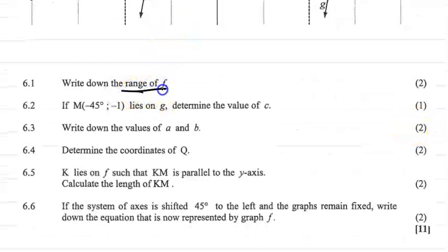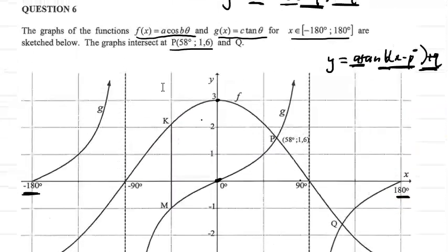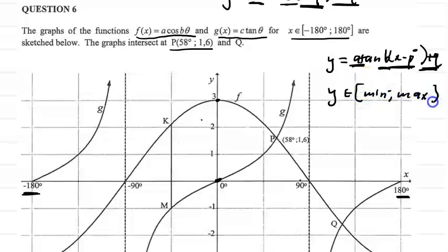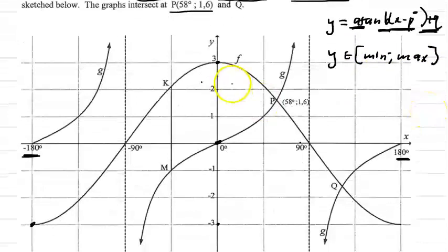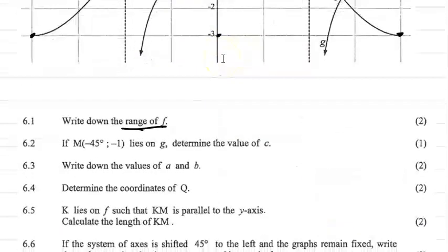Question 6.1 says: write down the range of f. Range is from your minimum y-value to your maximum y-value. We already discussed that the minimum is minus 3 and the maximum is 3. So the range is: y ∈ [−3, 3].